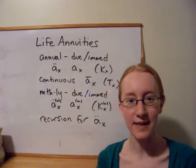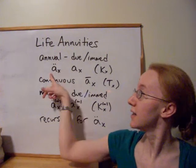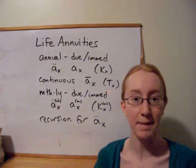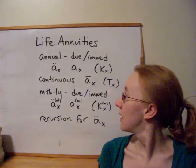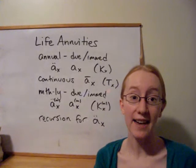Each of these two kinds of annuities, we represent the present value by these two symbols here, dots for the due case and no dots for the immediate case. And both of them are going to depend on the value of the random variable kx. That's what we care about here.